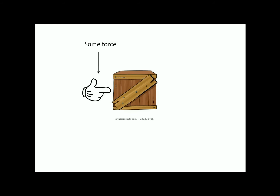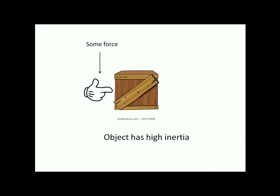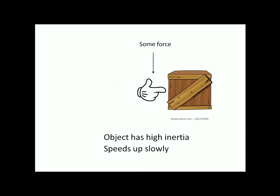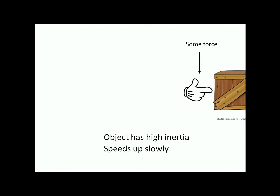You might remember this from previous lessons, but I'm just going to go through inertia really quickly. So let's say you have an object, and you apply some force to that object and push it in some direction. Let's say that this object has high inertia — what that means is that with that force, the object is going to speed up relatively slowly.